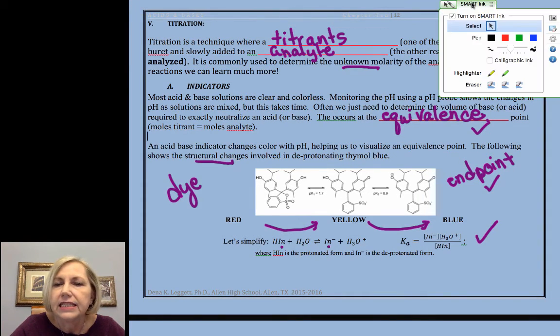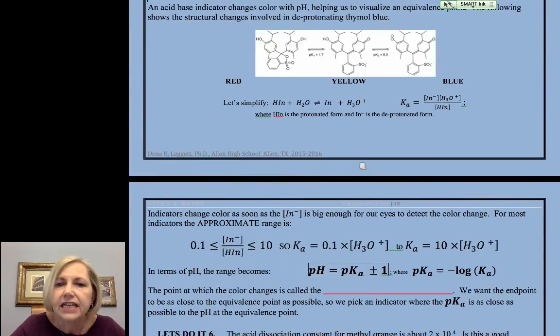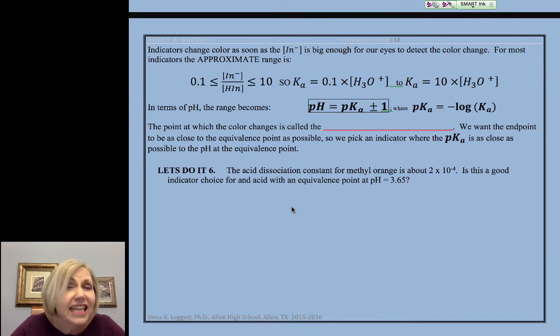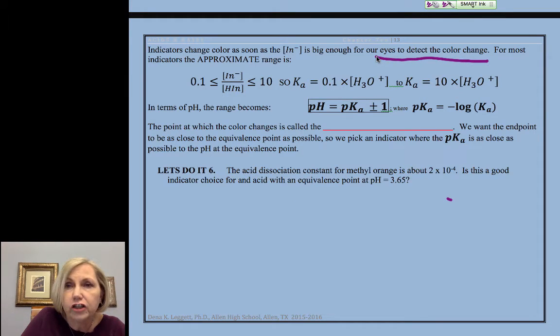Now, let's take a look at the guidelines for how we visualize it. When is there enough for us to know? So, the indicator's got to react, and it's got to build up enough of the new structure for our eyes to detect the color change. For most indicators, that happens when the ratio of the deprotonated to protonated form is between about a tenth and ten. So, when the deprotonated form is ten times greater or when it's a tenth of the original. That gives us an order of magnitude range.